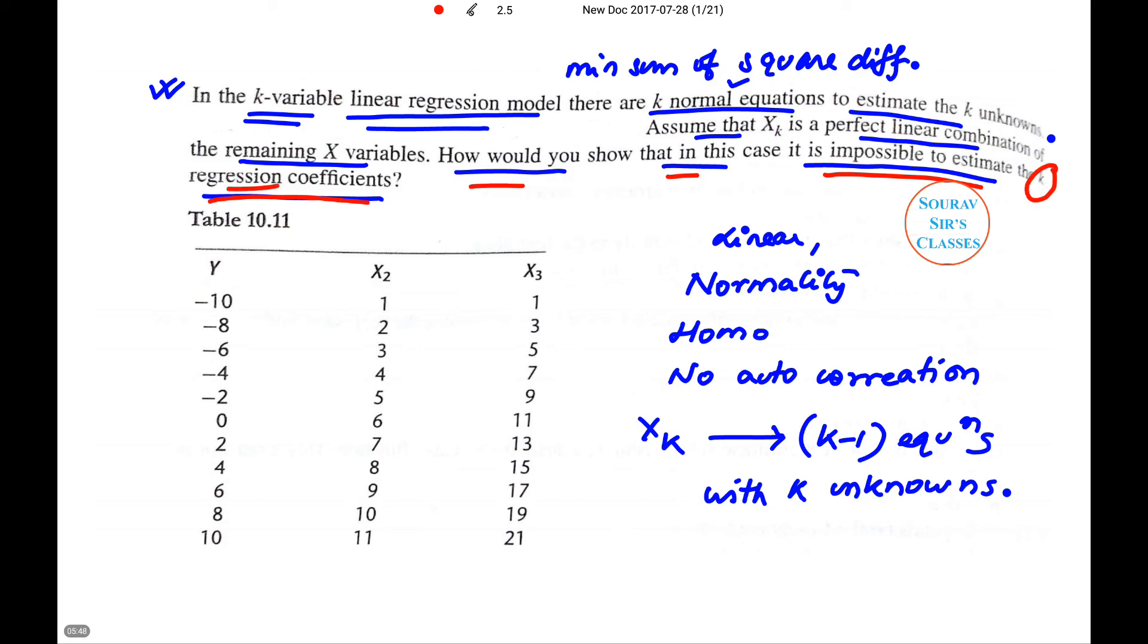So this we can say because with more unknowns than equations, unique solutions are not possible. That means it is impossible to estimate the k regression coefficients.